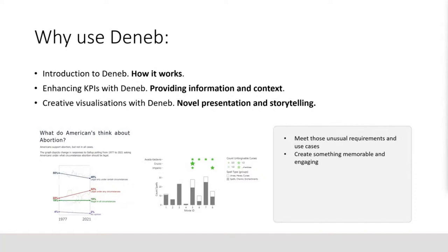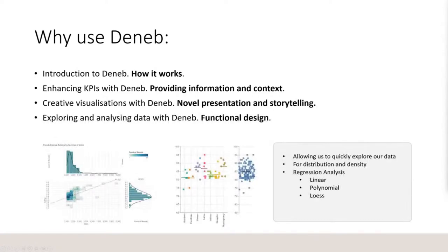Other presentations demonstrated how we can get creative with Deneb to build bespoke visualizations to engage users or better communicate our message. Deneb is really good for unusual requirements and use cases — we can create novel and memorable presentation and storytelling. For example, here's a slope graph I created showing the change between two points in time, with a graph behind it showing the movement over all the dates between 1977 and 2021. And here is a Harry Potter dataset which I've made to look like Harry Potter-themed as well.